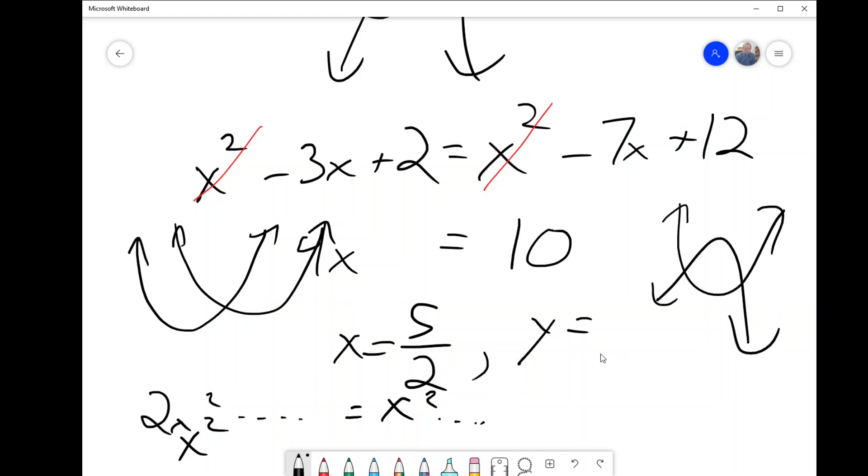Although with this one, the 2x² and the x², what we'd have would be a wider parabola and a narrower parabola both opening up.